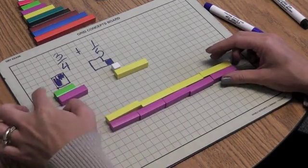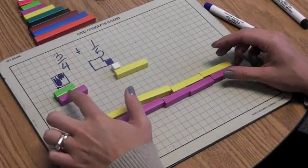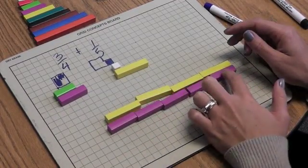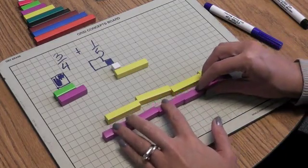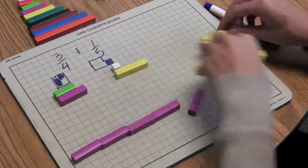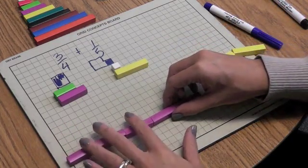So how can I take 3 quarters and change it to have a denominator of 20? Well, I can take this 4 and times it by 1, 2, 3, 4, 5. And remember when we work with fractions that whatever we do to our bottom number, we need to also do to our top number or our numerator.